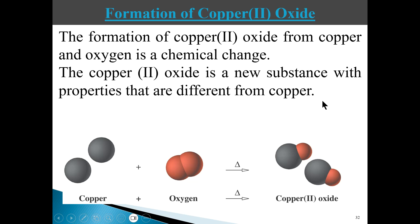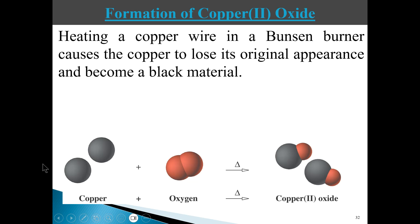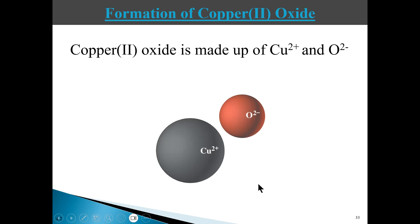In every chemical change, a new substance is formed with different properties compared to the original substances. A change in color is one indicator of a chemical change. The copper-2-oxide is actually made up of copper ions and oxide ions — ions are particles that are charged, and we'll talk about that in a later chapter.